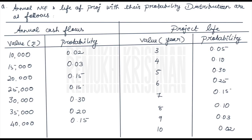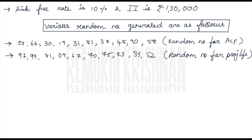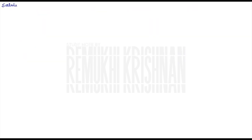The question provides annual net cash flows and the life of the project with their probability distributions. Annual cash flows and their probabilities are given, and so is the project life with its probabilities. The risk-free rate is 10% and the initial investment is ₹1,30,000. Random numbers are also provided — one set for annual cash flows and another set for project life.